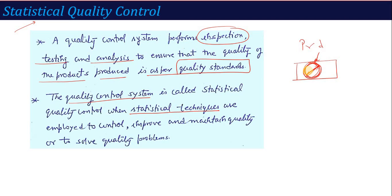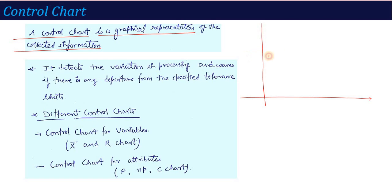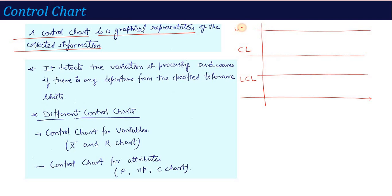In short, the topic is about how you maintain and achieve quality in your system using statistical methods — specifically using control charts. A control chart is a graphical representation of the collected information. In this chart there is a center line, below it is the lower control limit, and above it is the upper control limit. These control limits are also called tolerance limits.